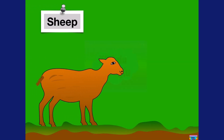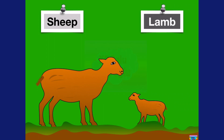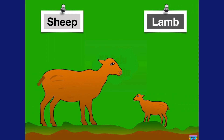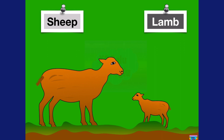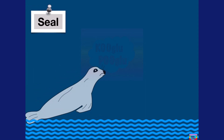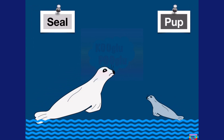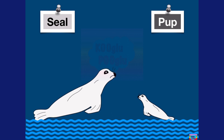Here we got sheep, and a baby sheep is called a lamb. Here we have a seal, and a baby seal is called a pup.